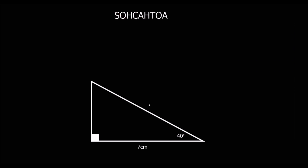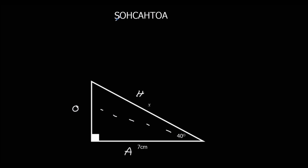There are a lot of steps to doing these questions. Always start by labelling the triangle: the longest side is H, the one opposite the angle is O, and the one in between the angle and the right angle is A. Once we've labelled it, we figure out which formula to use — SOH, CAH, or TOA.